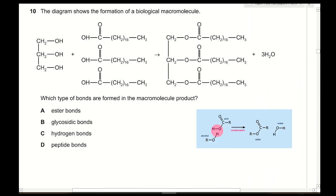Question 10: The diagram shows the formation of a biological macromolecule — a glycerol molecule and three fatty acids. We can see the ester linkage, meaning an ester bond is formed. This is formed by the removal of one hydrogen from the hydroxyl group and the full hydroxyl group of the carboxylic acid to form a water molecule, leaving an ester bond. Therefore the correct answer is A.